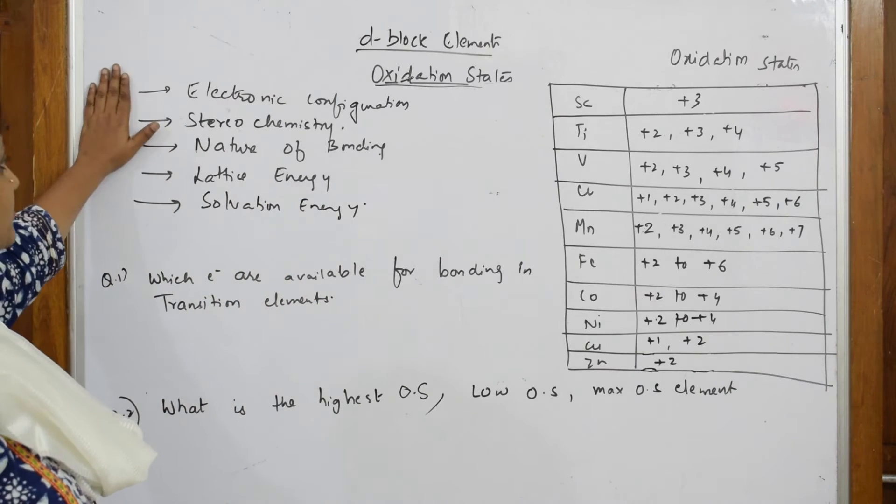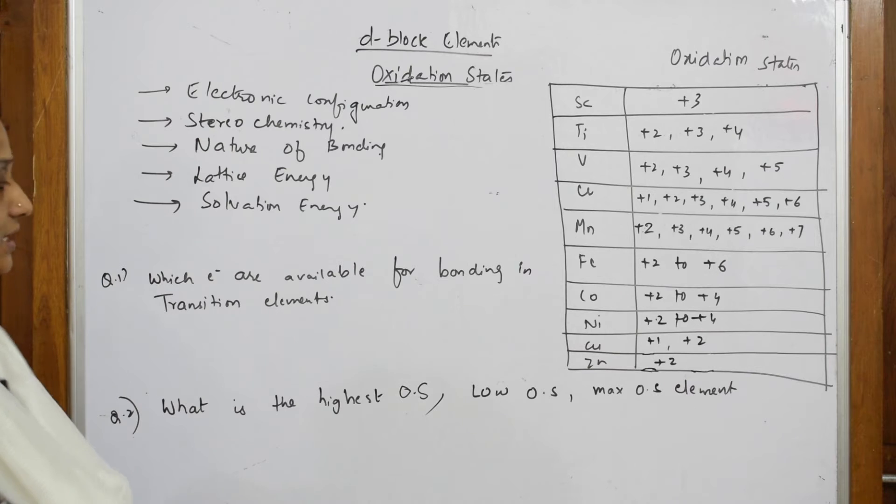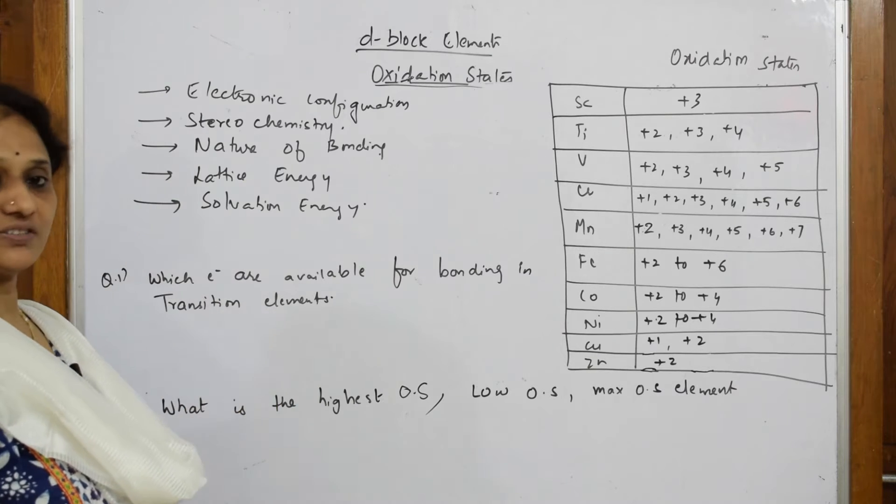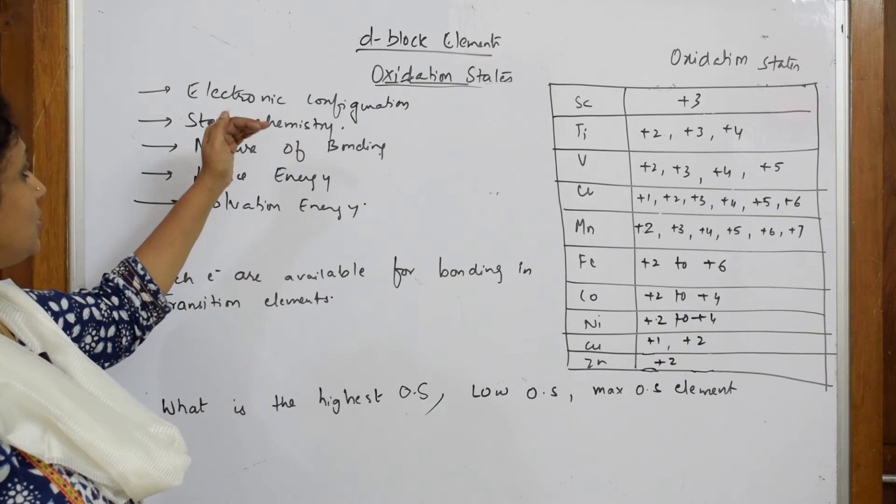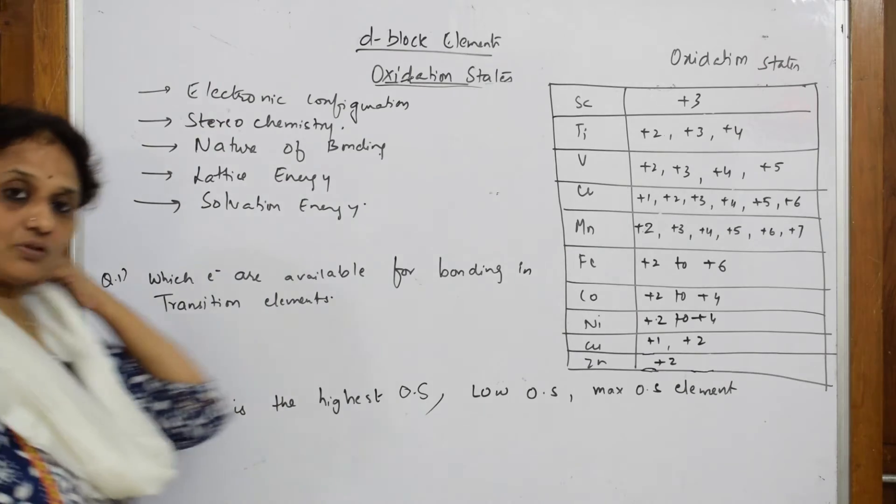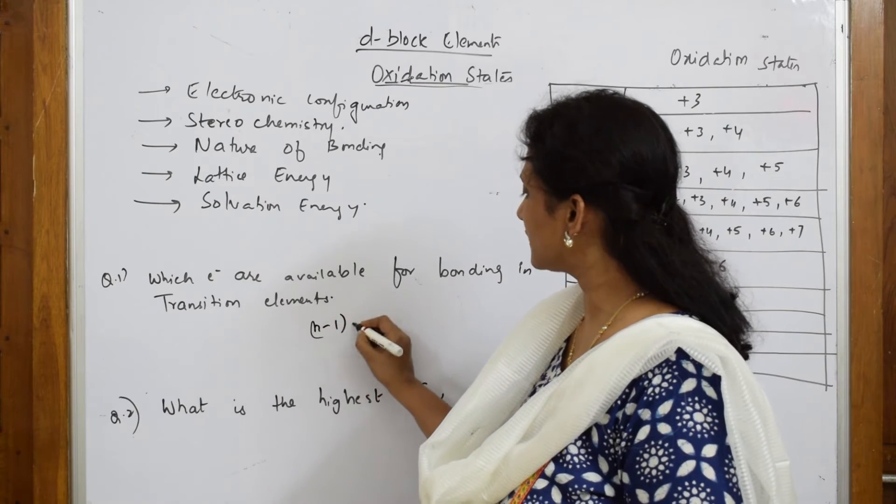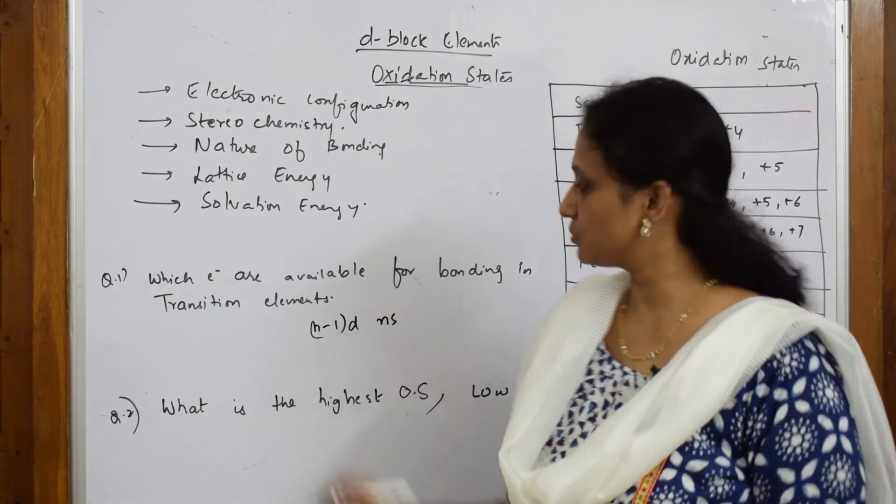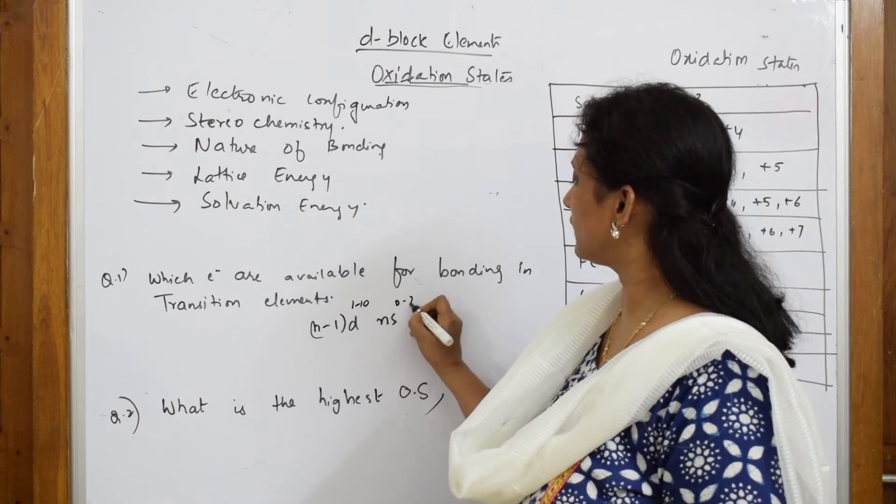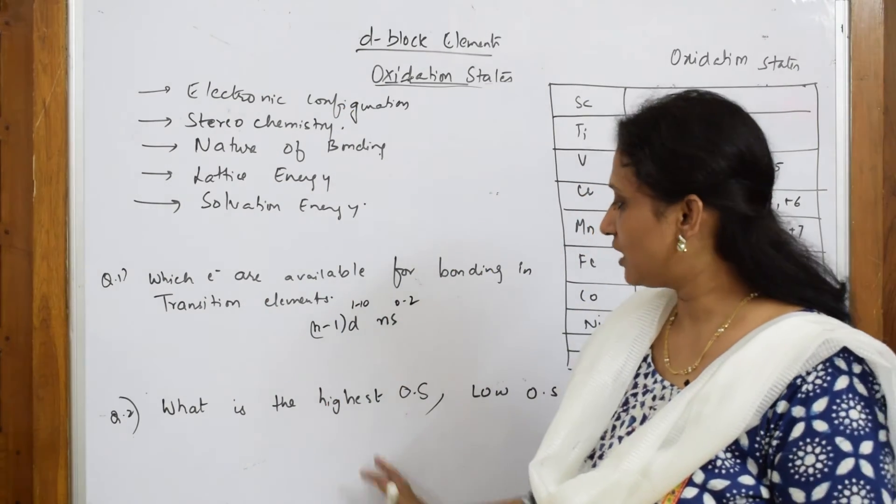All these concepts will affect or show an impact on the element oxidation state. Let's see the first question: which electrons are available for bonding in transition elements? First question is based on electronic configuration. The electrons of n minus 1 d as well as ns electrons are utilized, so both are used in bonding. N minus 1 d 1 to 10 and ns 0 to 2.